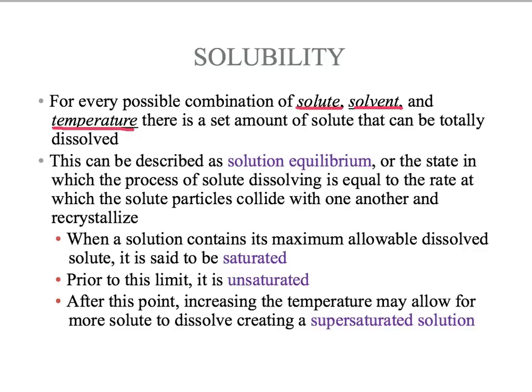When we reach the point where a solution has as much solute as it can possibly dissolve at that temperature, it is said to be saturated — basically, it's full of solute. As we lead up to that, from no solute all the way until equilibrium, the solution is unsaturated. After the point of saturation, the only way to force the solution to contain more solute is to increase the temperature, which will allow for more solute to dissolve, creating what's called a supersaturated solution — more full than we would expect or predict.